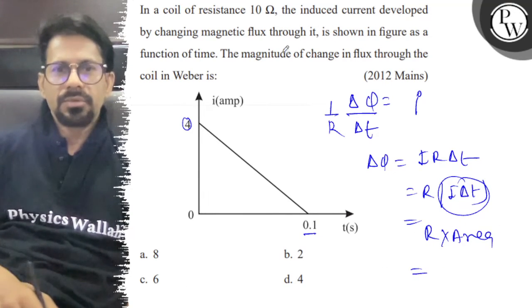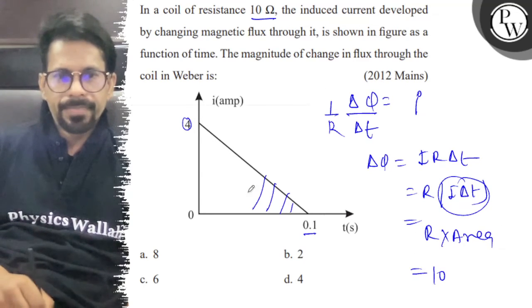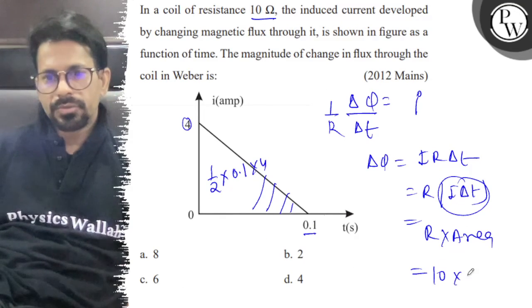So, how much is your resistance? We have 10 ohm. Look at the area. How much is it? 1 by 2, base into height, 0.1 into 4. So, 0.2, that is equal to 2.